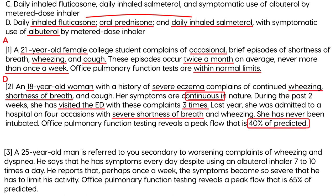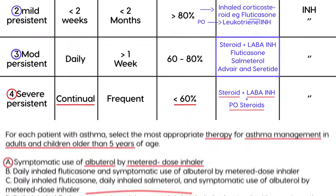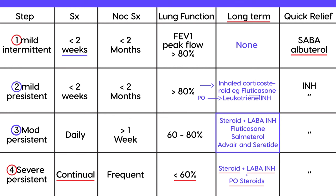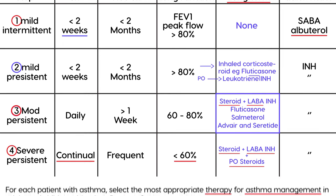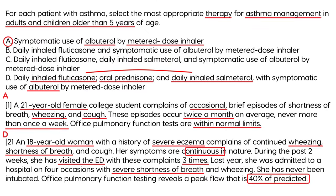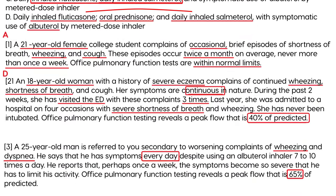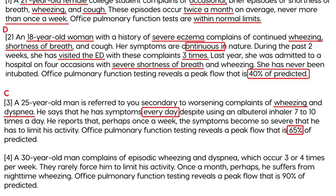A 25-year-old man has symptoms every day despite using albuterol seven to ten times per day. Symptoms limit activity about once a week. Peak flow is 65%. Daily symptoms and 60–80% peak flow place him in Step 3, requiring the inhaled fluticasone plus salmeterol combination (Advair). The answer is C.